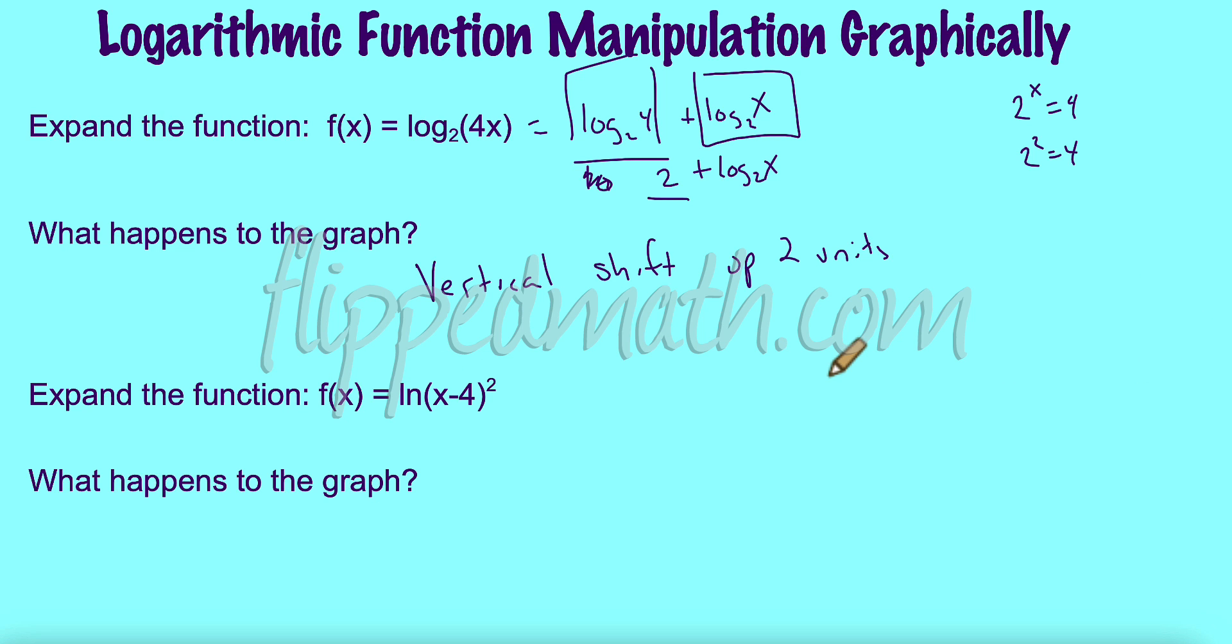Let's take a look at another one. What happens here to this graph? Well, let's expand it. I have a power rule. So I'm going to bring that down. So now that's 2 times the natural log of x minus 4. So what's going to happen to the graph? Well, if I was doing the natural log of x, and I compare it to this graph, what happens to it? Well, I'm going 4 to the right. Shift right 4, and I'm multiplying the outside. So I have a vertical dilation of 2. So this graph is going to expand vertically by 2. That's what's going to happen.